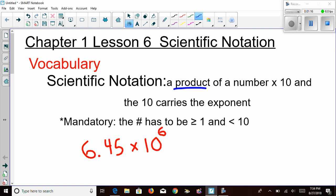In the definition, it says a product. Well, we're multiplying. It says a number. In this case, that is the 6.45. We have the times 10, and the 10 carries the exponent, which in this case is the 6th.